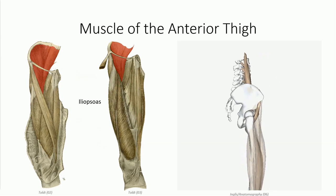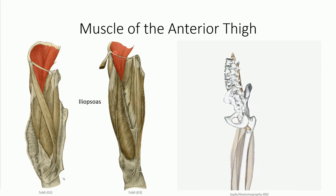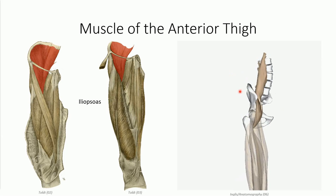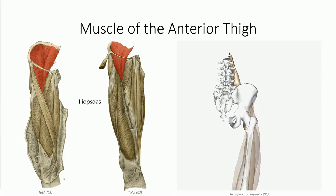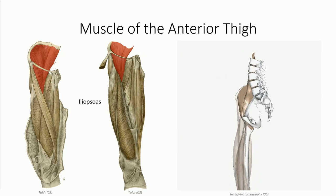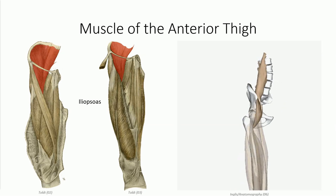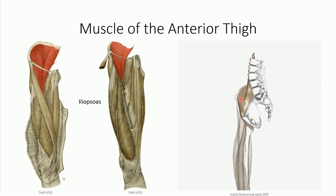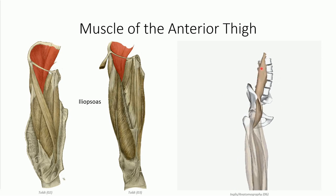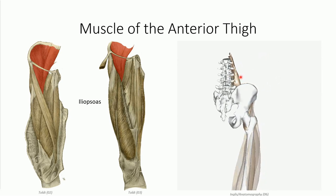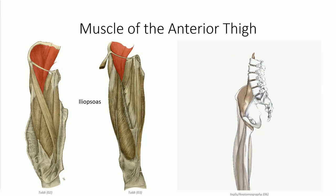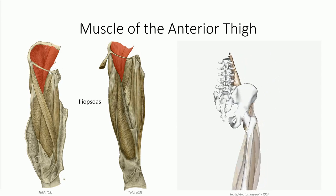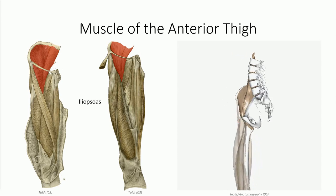Although not exactly part of the anterior compartment, this is a good time to introduce the iliopsoas muscle, as you will encounter its distal-most portion where it inserts on the lesser trochanter of the femur. It is actually a fusion of two separate muscles: the iliacus laterally, which originates off the medial surface of the ilium, and the psoas major muscle medially, which originates off the transverse processes of the lumbar vertebrae. The muscle passes anterior to the hip and is the principal flexor of the hip.